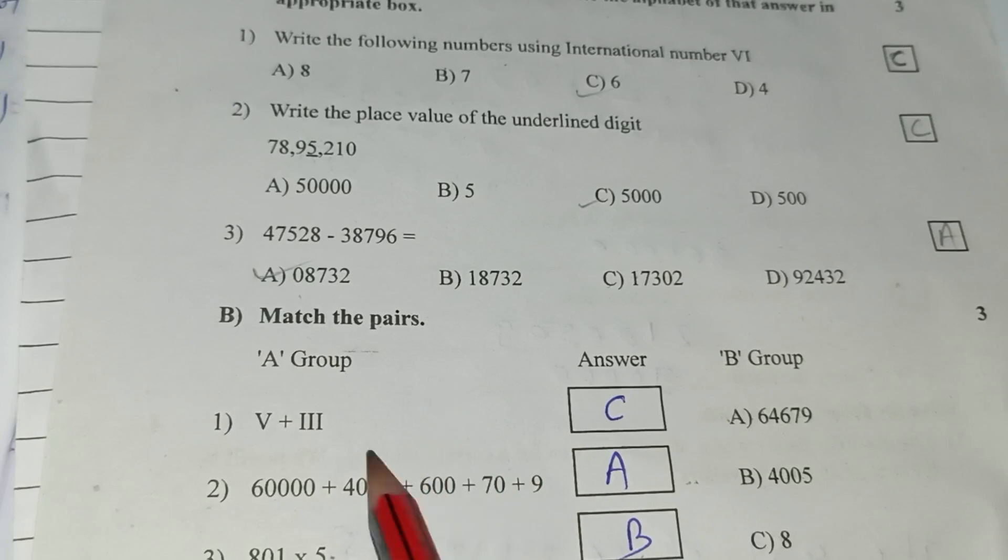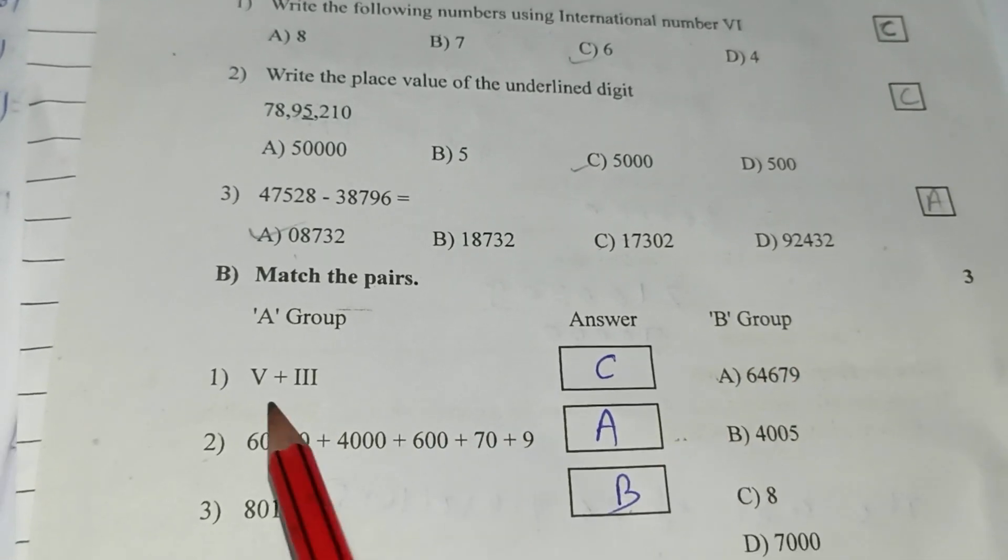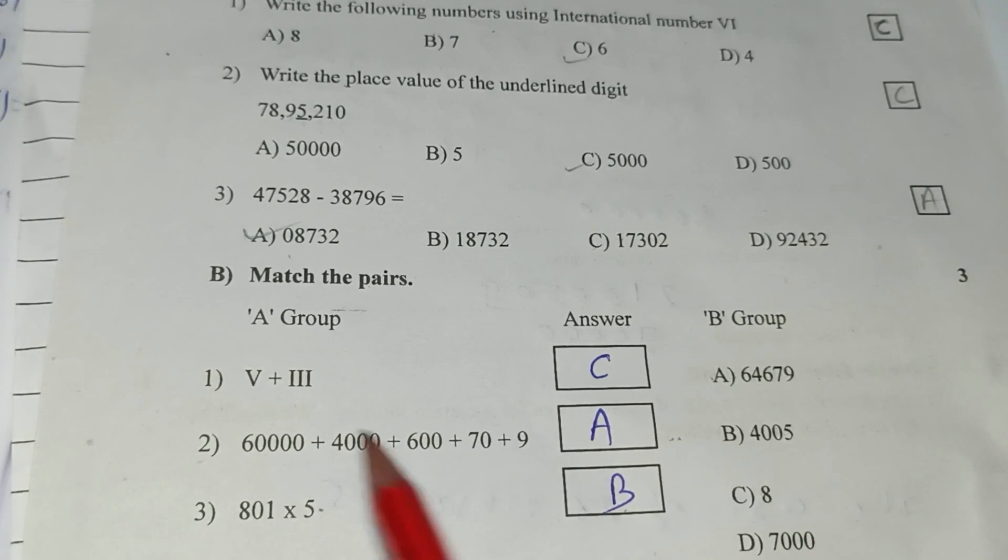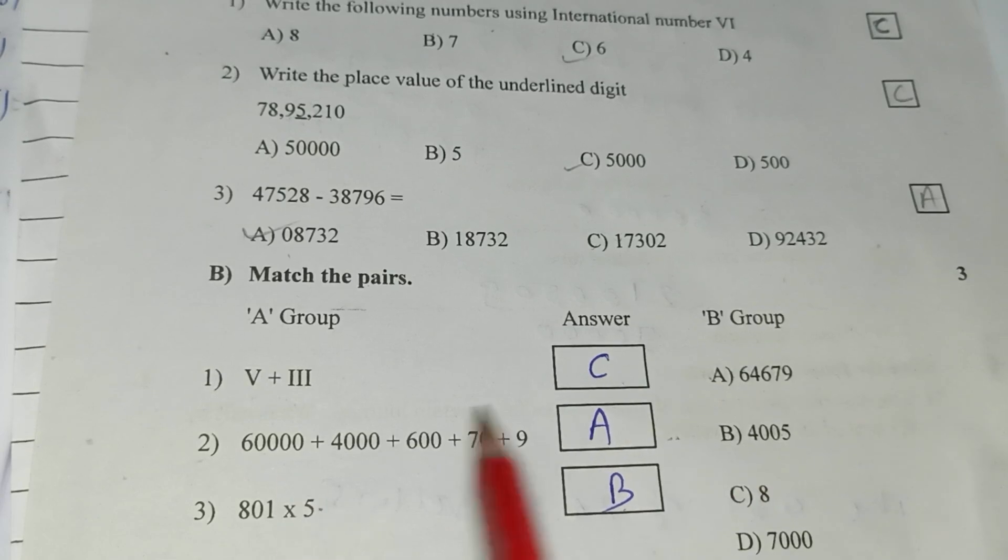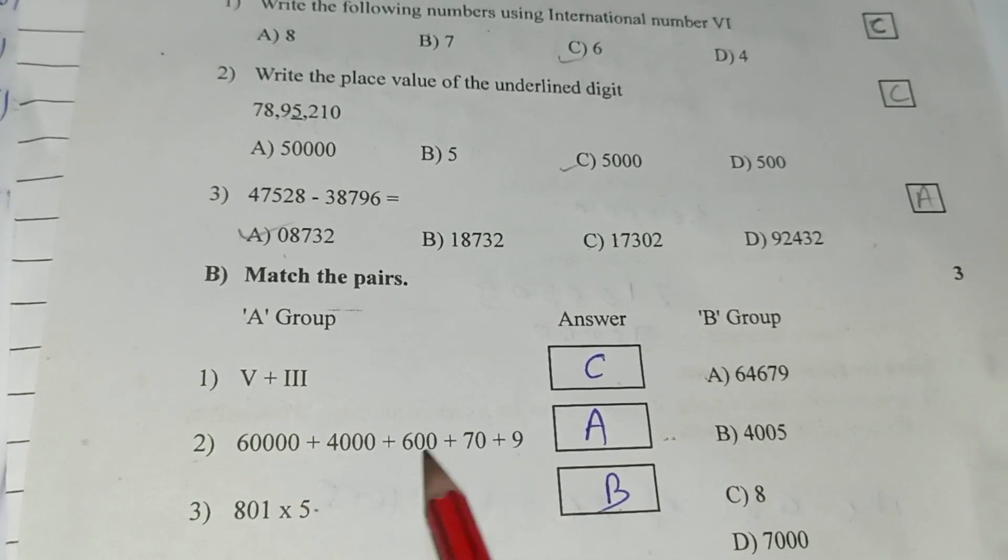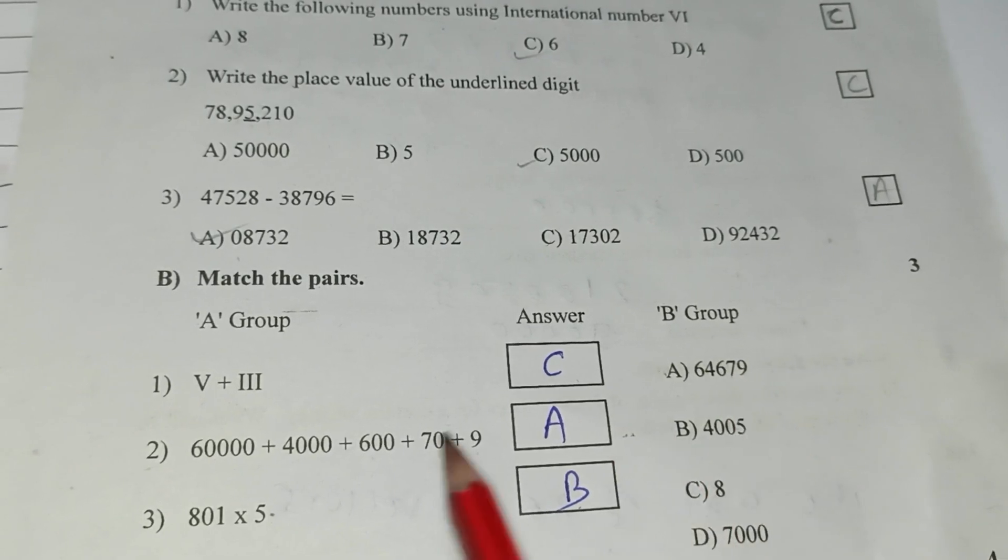Match the pairs. A group, B group. Phi plus 3, that means phi means 5 plus 3, 8 C. Here 9, 7, 6.